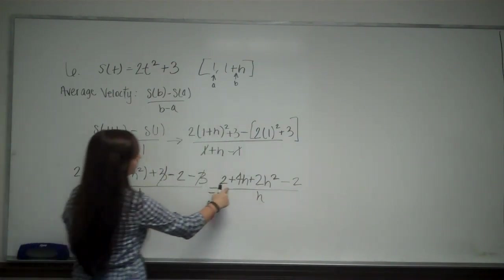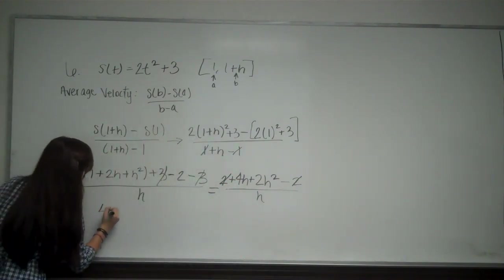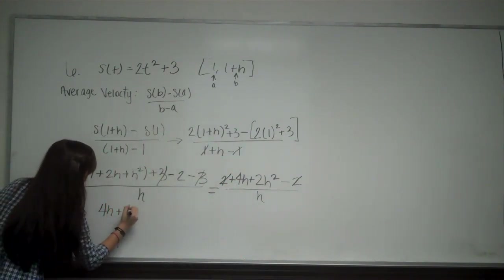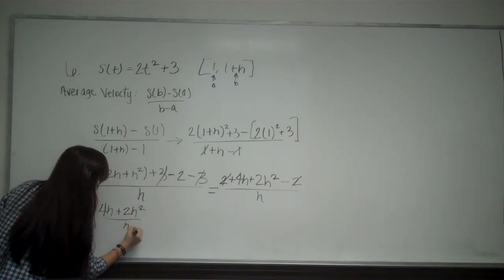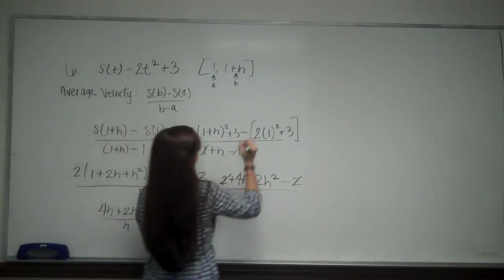And now, from here, my 2's are going to cancel. So I'm left with 4h plus 2h squared over h. Now, they already told me in the problem that h cannot equal 0.